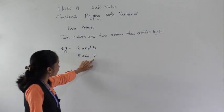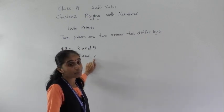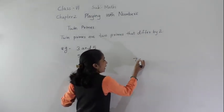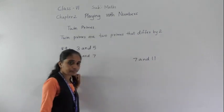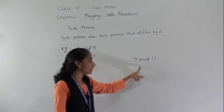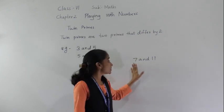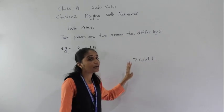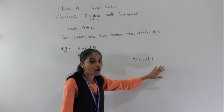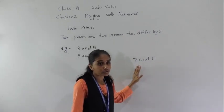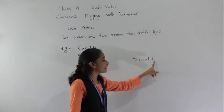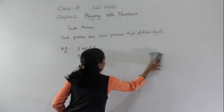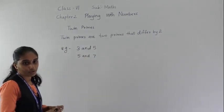Now after that, if you look after seven, the next prime number is eleven. Are seven and eleven twin primes? No. Seven and eleven are not twin primes because they differ by four.